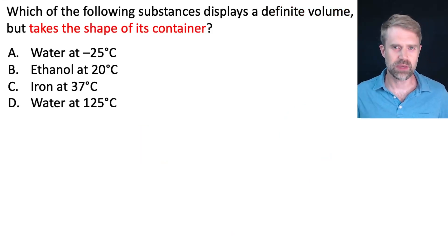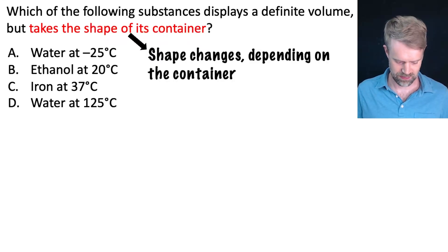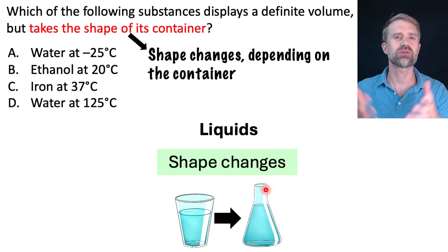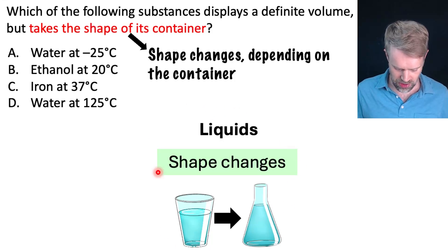First, what does it mean if something takes the shape of its container? Well, that means that the shape changes depending on the container it's in. For example, the shape of liquids changes in different containers. When water is in a glass, it has the shape of the glass. Pour the water into a triangular flask and its shape changes. Now it has the shape of the flask. So liquids take the shape of their container.